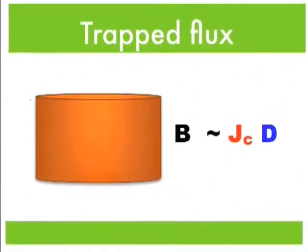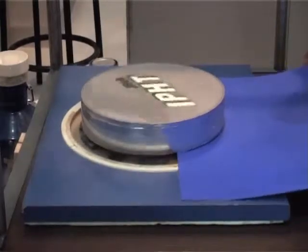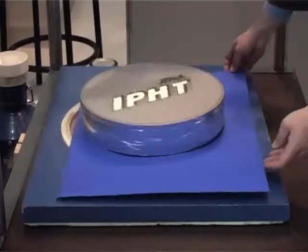If you were to increase the sample size by a factor of two, but JC were to come down by more than a factor of two, you wouldn't improve trapped field. So as long as you can maintain JC, the bigger the sample, the better to give you the highest trap field.